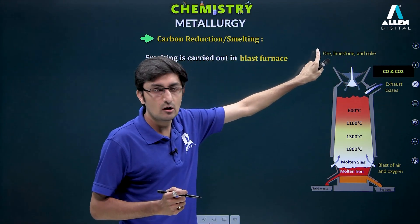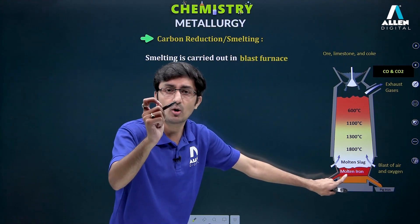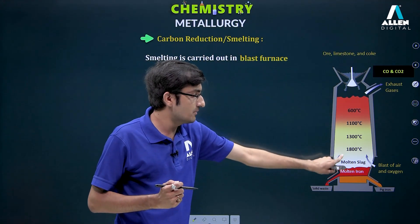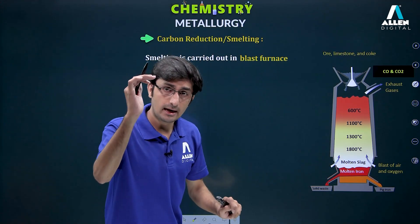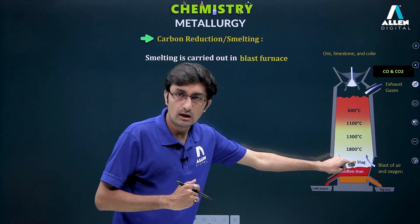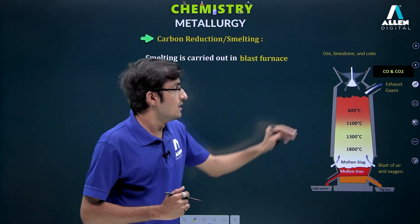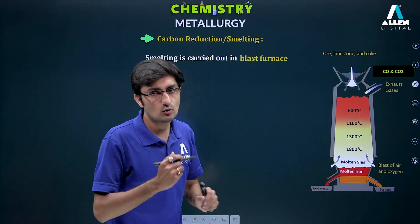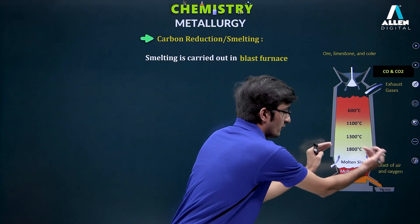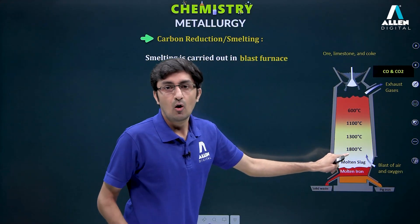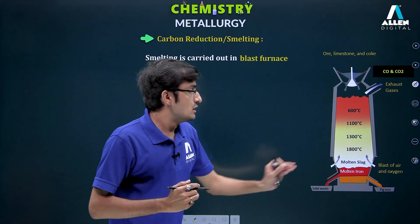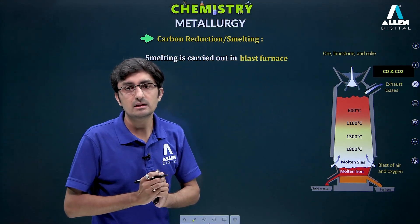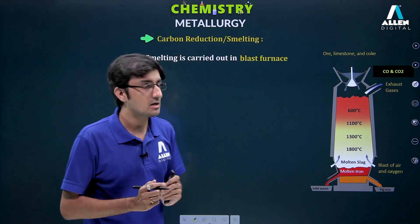Coke reduces metal oxide to metal. Metal is obtained in molten state — molten iron. Slag comes from limestone and the impurities present in the ore. Slag is lighter, so it stays on top; iron is heavier, so it stays at the bottom. The blast furnace is divided into zones with different temperatures at each level. A blast of air and oxygen is added at the bottom so it mixes with coke and ultimately produces CO or CO₂. Waste gases exit from the top.